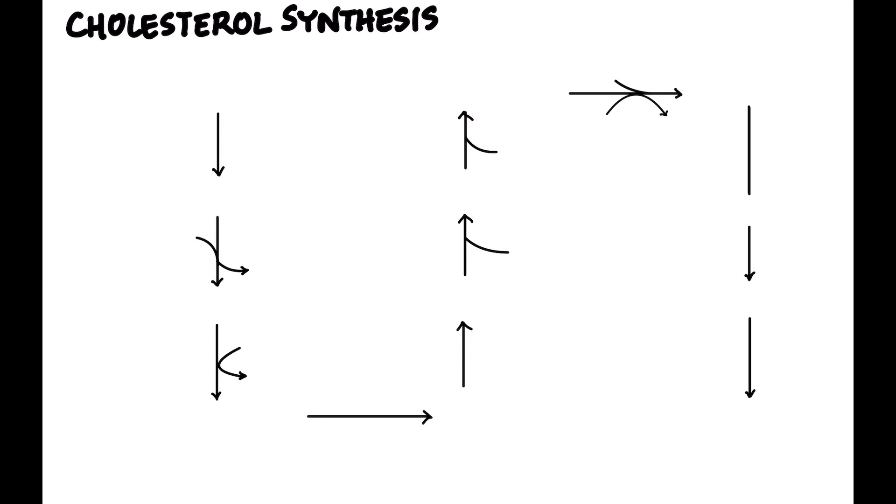All right, so we start out with acetyl-CoA, obviously very important intermediate if you haven't figured that out by now. And then we add another acetyl-CoA, and this is a thiolase enzyme, and we get acetoacetyl-CoA.